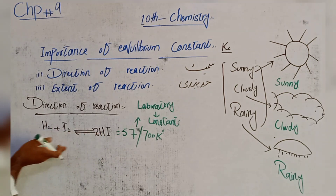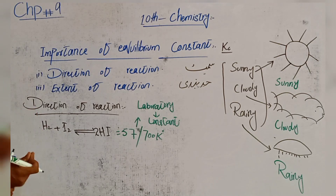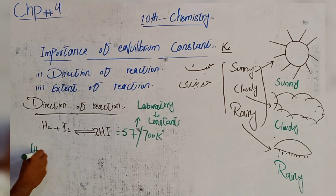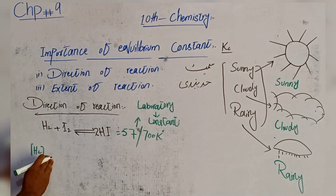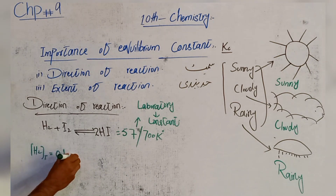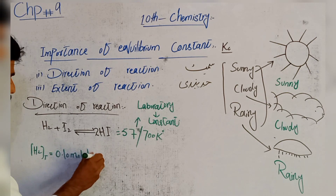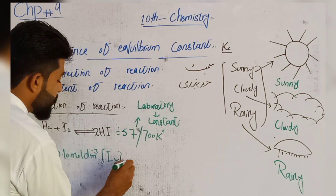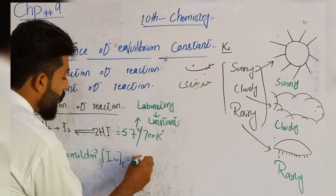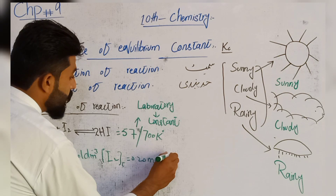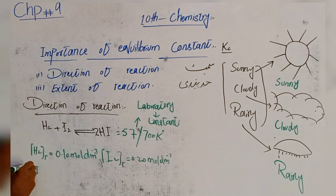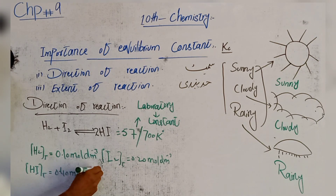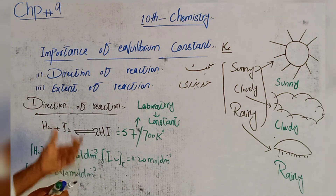اب ہمیں reaction کی direction find out کرنے کے لیے given values استعمال کرنی ہیں۔ H₂ کی concentration 0.10 mol/dm³ ہے، I₂ کی concentration 0.20 mol/dm³ ہے، اور hydrogen iodide (HI) کی concentration 0.40 mol/dm³ ہے — یہ values پہلے سے given ہیں۔